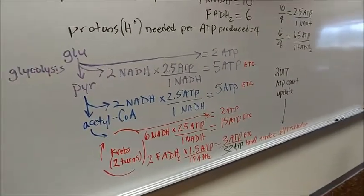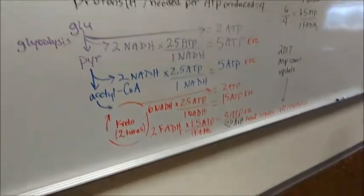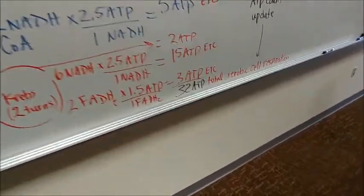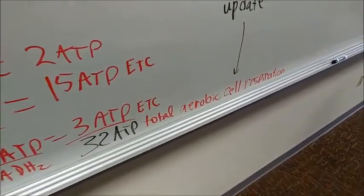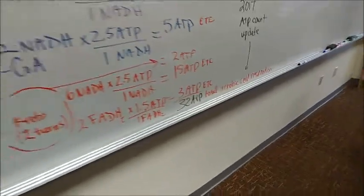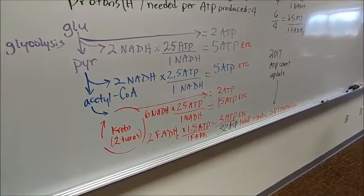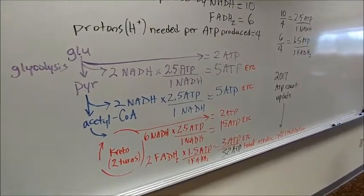I'd like to make a few clarifications about the ATP count that we get from glucose in total aerobic cellular respiration. When we say aerobic, we mean that oxygen is the final electron acceptor and that it's not short-circuited by a lack of oxygen availability.